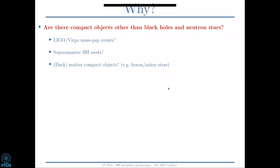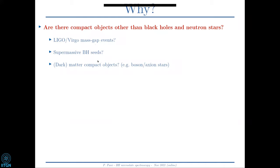There are several motivations. The first is that there might not only be black holes as predicted by GR in the universe. There might be other compact objects that populate the universe alongside black holes and neutron stars — objects that could explain some of the weird events LIGO and Virgo have detected, for example in the so-called mass gap. We also don't know exactly how to form supermassive black holes at high redshifts, and dark matter might be formed by compact objects made of new fundamental fields, as in the case of boson stars.